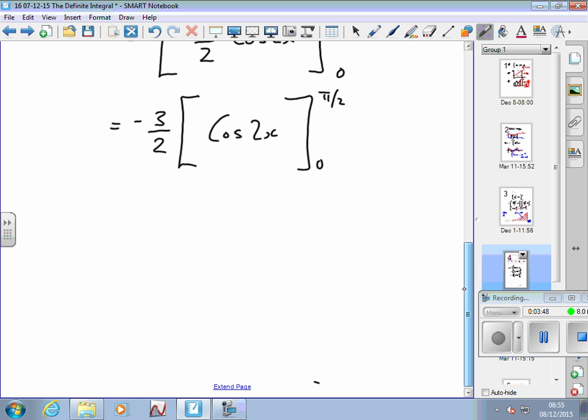In other words, I'd write this equals minus 3 over 2 times, and now I'm going to put my limits in, curly brackets. Cos of 2π over 2 is just π, cos π minus cos 1.